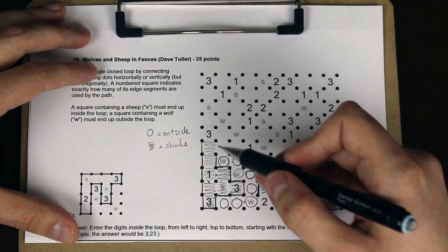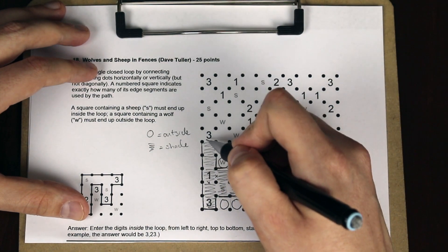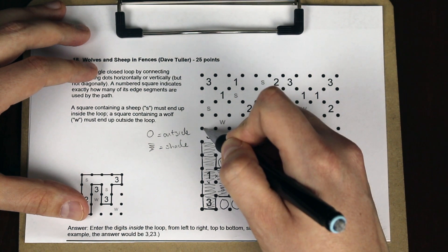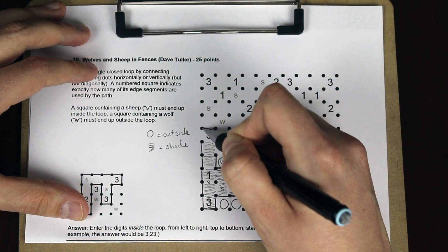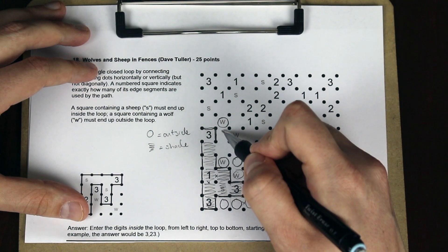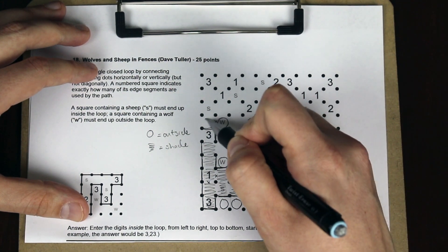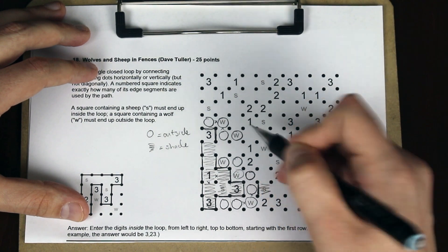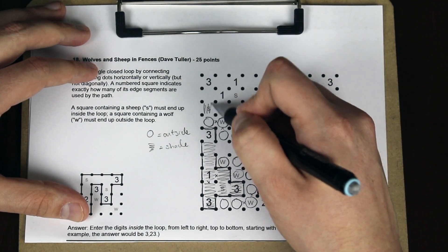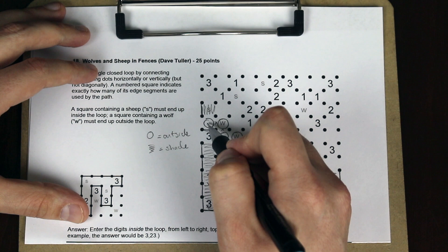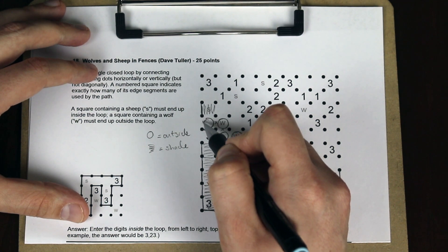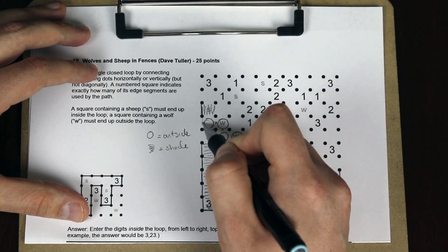From here we're going to use some more of our Slytherlink rules. We have a line coming into a three, so these two lines must be filled in here. That means these lines cannot go here. Outside and outside. This needs to be inside. Can this connect through here? Well, if it did, this would be inside the loop.